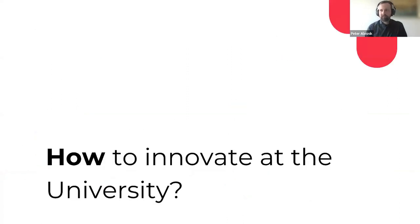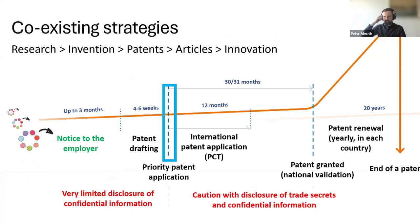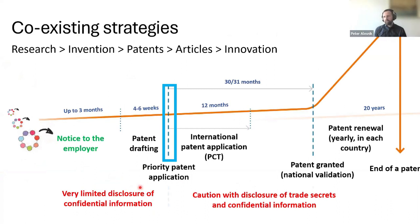Now I'd like to talk briefly about how to innovate at the university. At the university, we have to pay attention to coexisting strategies: we have research, collaboration with peers and companies, and we try to follow habilitation rules to get promoted. This is the standard process that describes how to go from research to a granted patent and beyond the end of a patent's life.